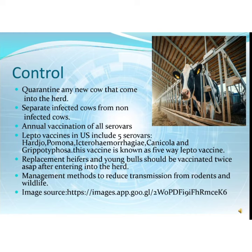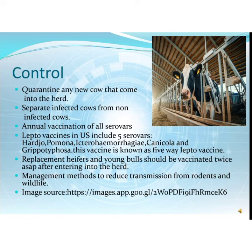As we know, prevention is better than cure. We should quarantine any new cow entering the herd and separate infected cows from non-infected cows. Annual vaccination of all serovars is recommended. Lepto vaccines in the US include five serovars: Leptospira Hardjo, Leptospira Pomona, Leptospira Icterohaemorrhagiae, Leptospira Canicola, and Leptospira Grippotyphosa. This vaccine is also known as the five-way lepto vaccine. Replacement heifers and young bulls should be vaccinated twice as soon as possible after entering the herd. Managemental methods to reduce transmission from rodents and wildlife should also be implemented.